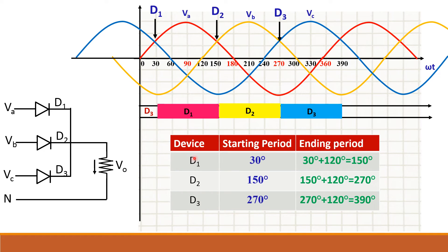Summarizing the conduction periods: D1 starts at 30° and ends at 150° (30 + 120 = 150). D2 starts at 150° and ends at 270° (150 + 120 = 270). D3 starts at 270° and ends at 390° (270 + 120 = 390°).